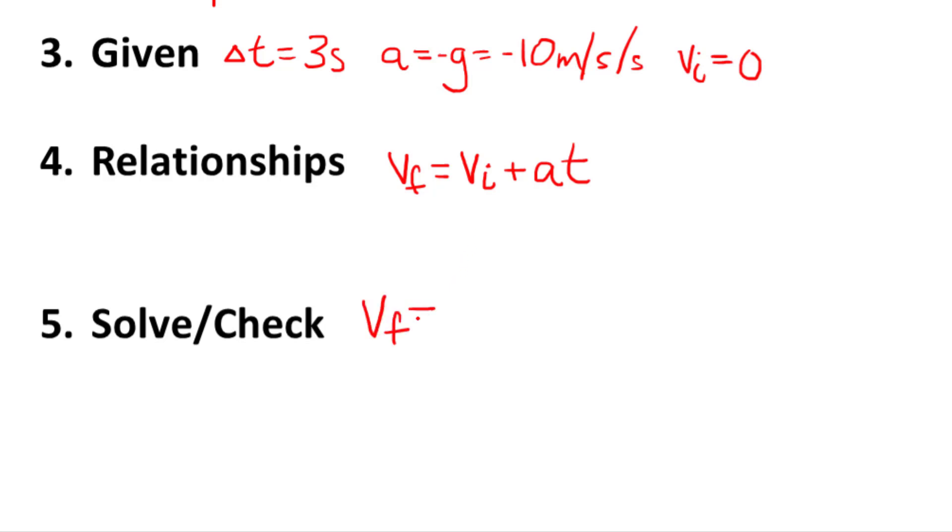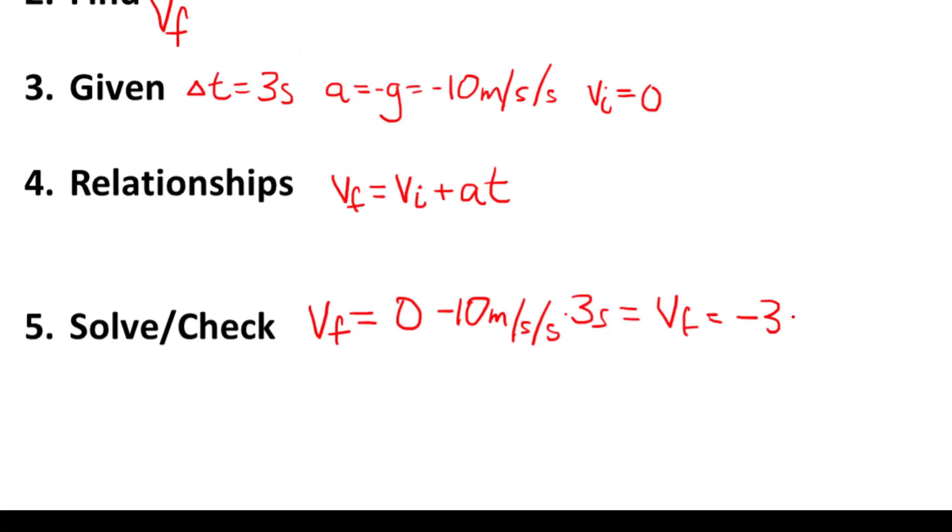So my final velocity is equal to my initial velocity, I'll put the numbers in, zero, minus 10 meters per second per second, the rate at which we are changing velocity, times our time, 3 seconds. I put this together, I get my final velocity is equal to minus 30 meters per second.